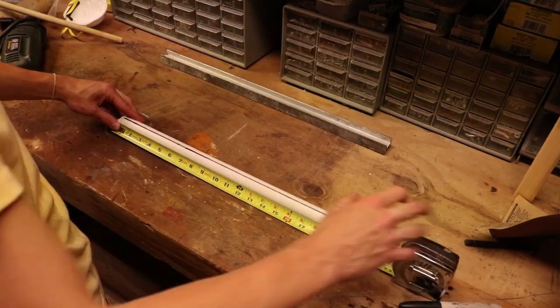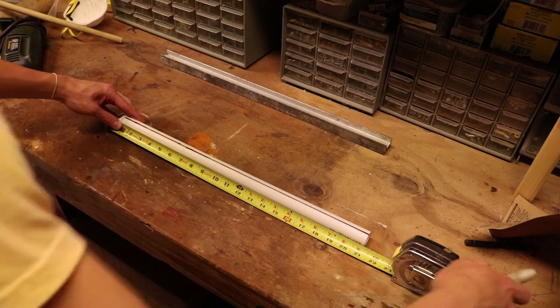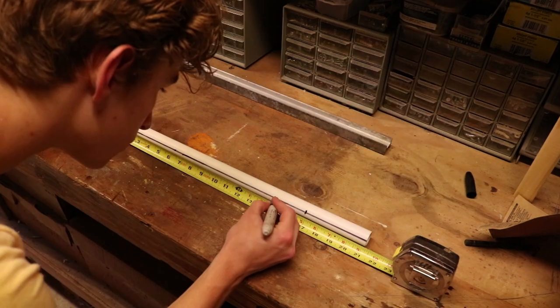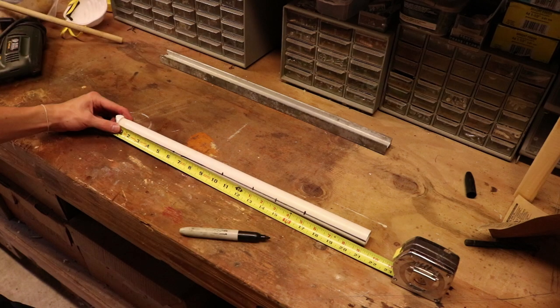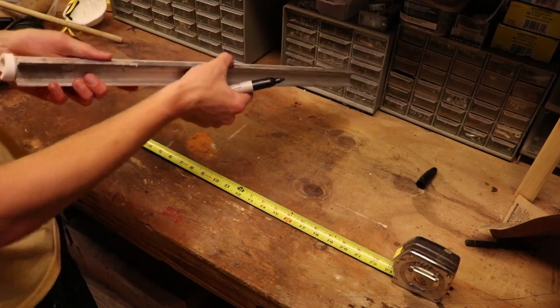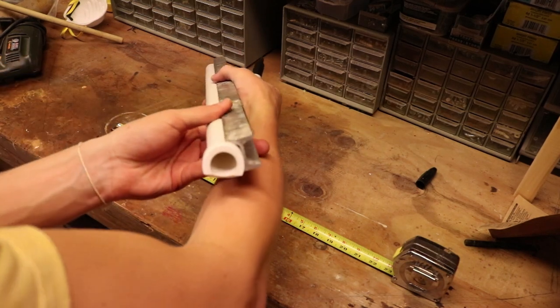Now we need to measure out where the holes will be going, and all these measurements will be in the description. Remember that there's four holes on the front and one on the back, meaning that you'll need to mark one more line dead center of the back.